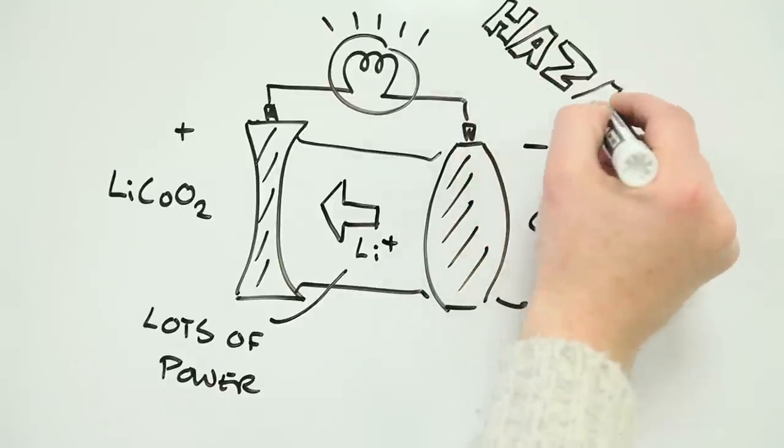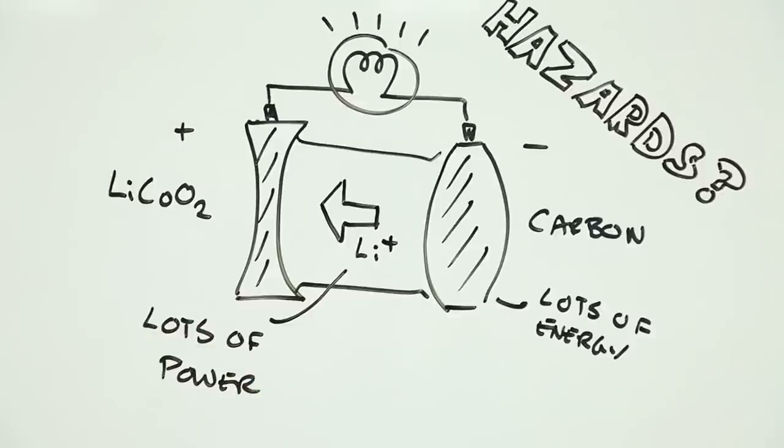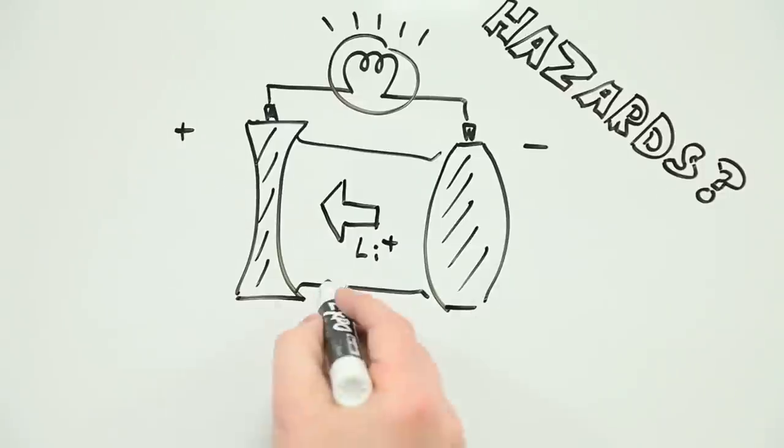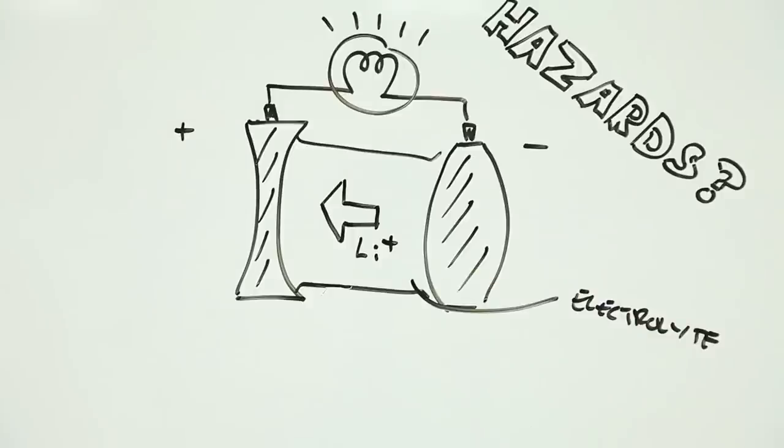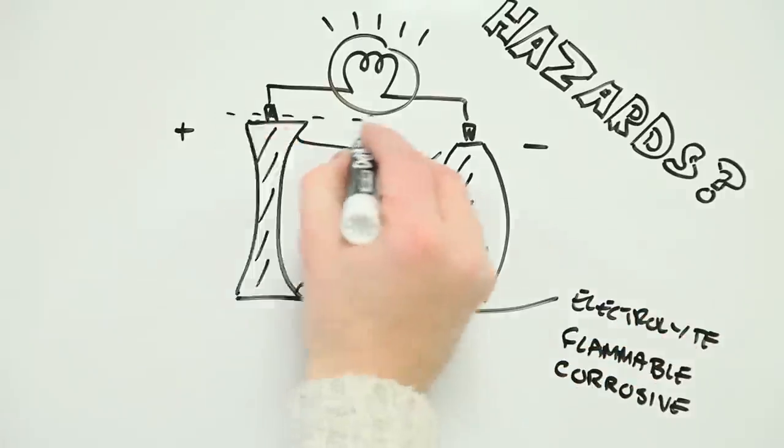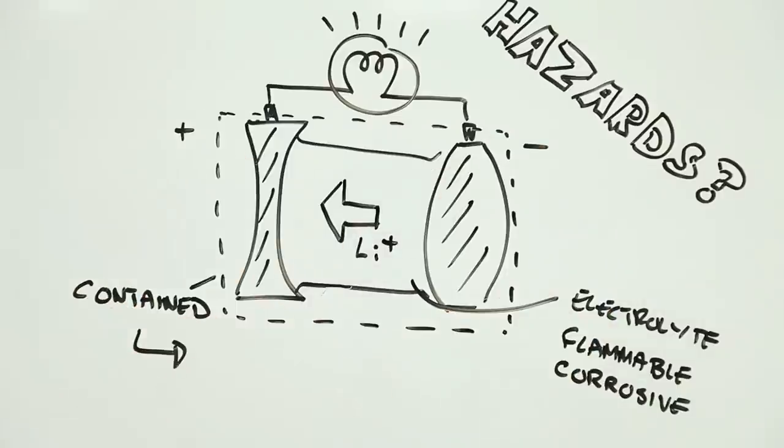So where are the hazards? And what turns these into risks? The primary hazard, the thing that leads to the most safety problems with lithium ion batteries is the electrolyte. In many cases, this is flammable and corrosive. Fine if it stays where it's supposed to, but not so good if it gets out.